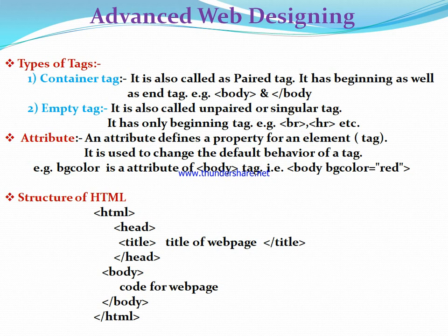The second type is the empty tag, also called an unpaired or singular tag. It has only a beginning tag and does not contain an end tag. Examples are BR and HR.